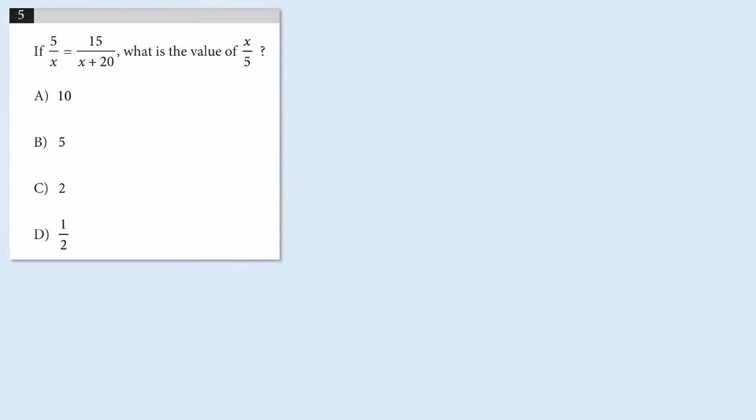This is a great problem for us to look at because it contains a trap that commonly appears in SAT math problems. So let's have a look. We've got an equation with one variable, so we can start solving for x. And you guys know about cross multiplication, so I can say 5 times x plus 20